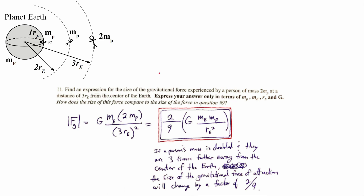In number 11, we consider what happens when more than one thing changes: the person is now three Earth radii from Earth's center and has twice the mass. Taking our expression, we replace MP with two times MP and RE with three times RE. Squaring the three gives nine, so the coefficient becomes two over nine. The gravitational force on this person is two-ninths the size of the force on a person of mass MP standing on the Earth's surface.